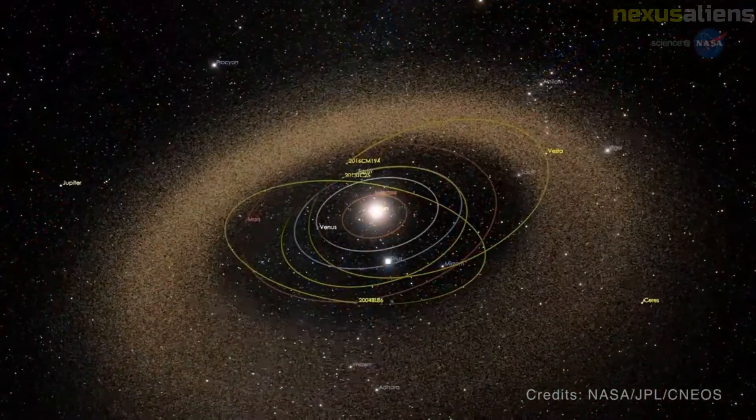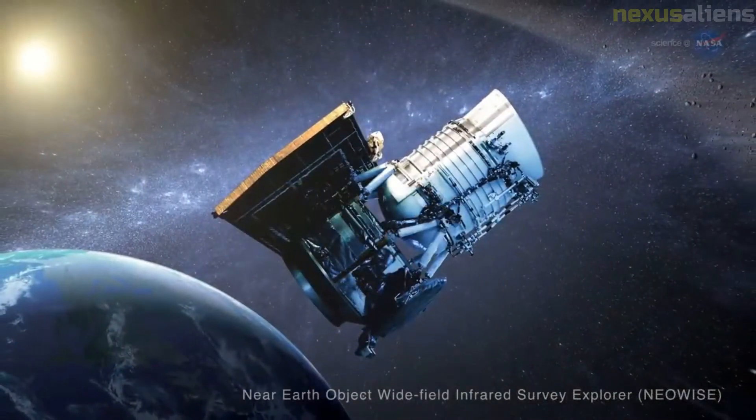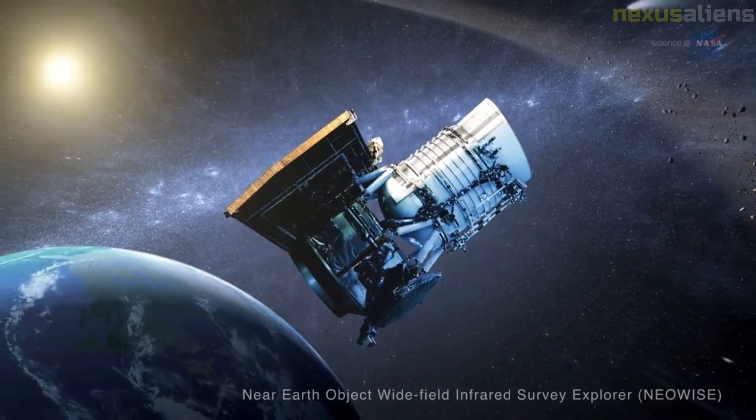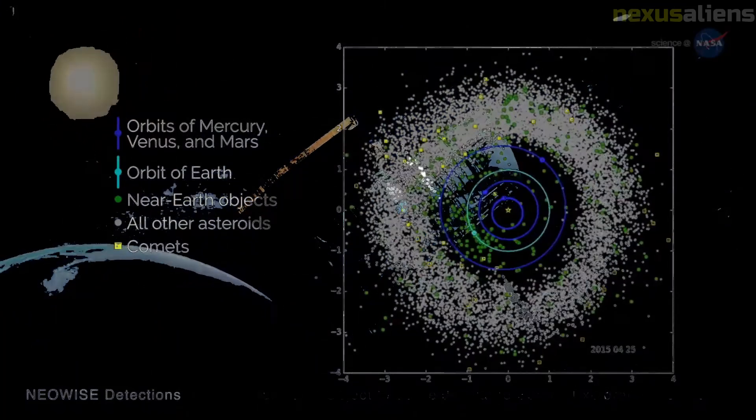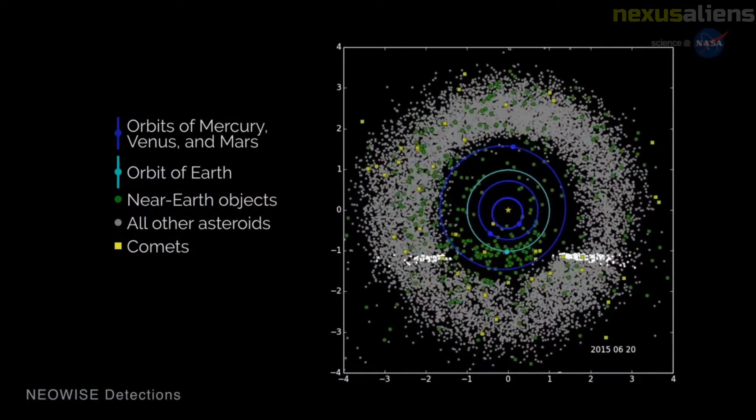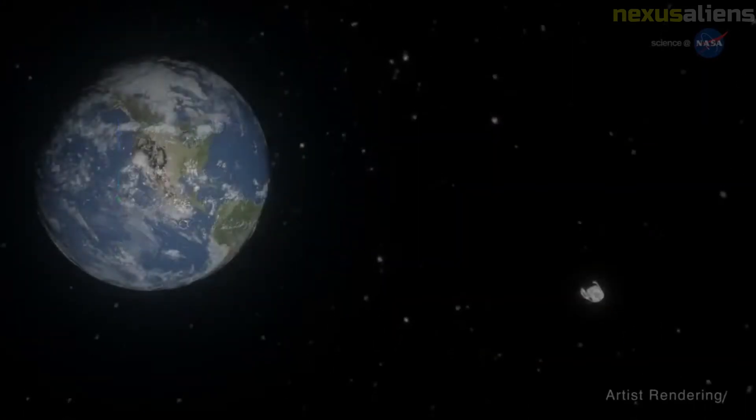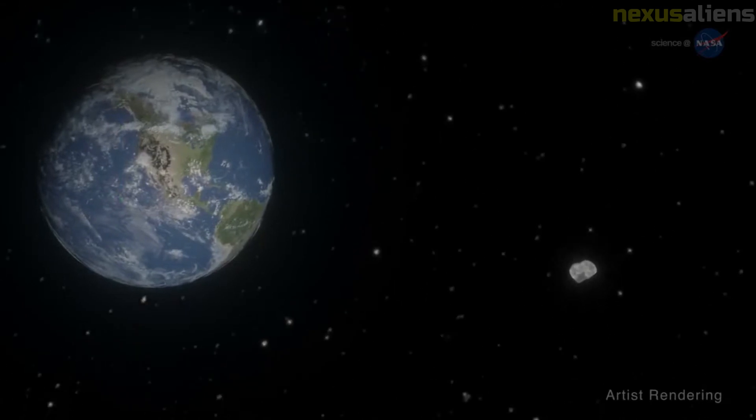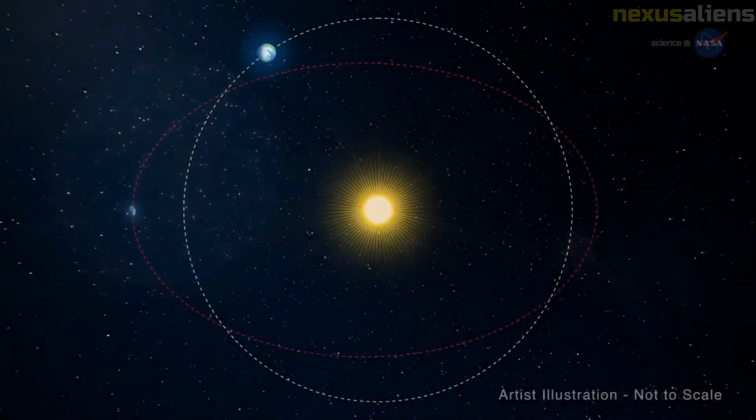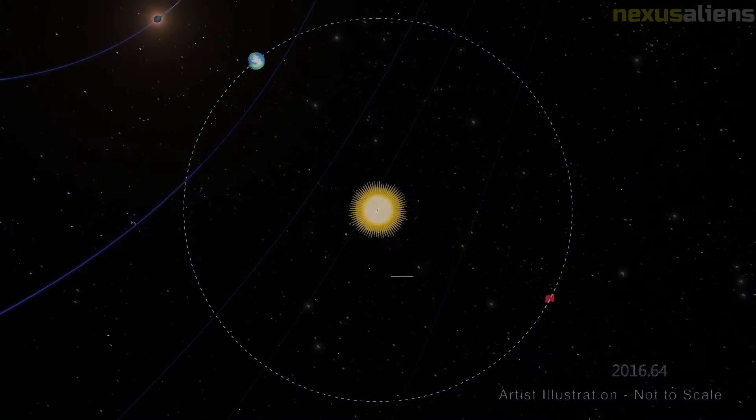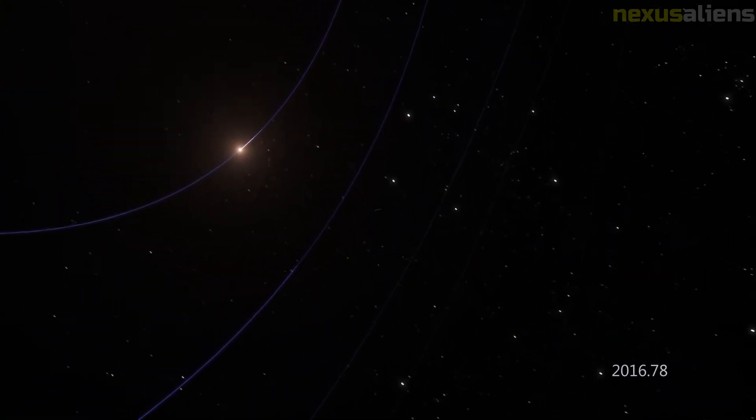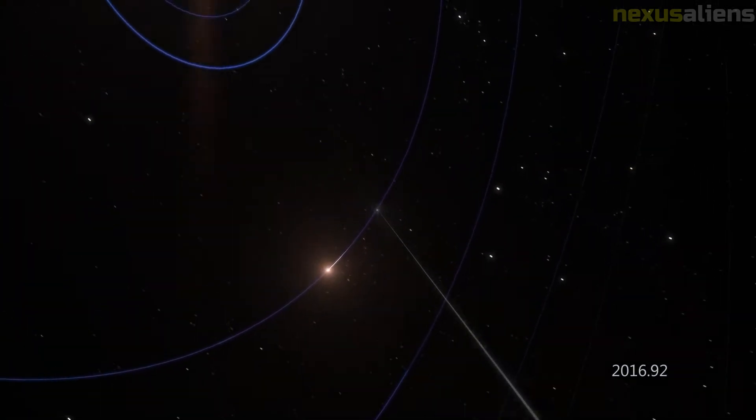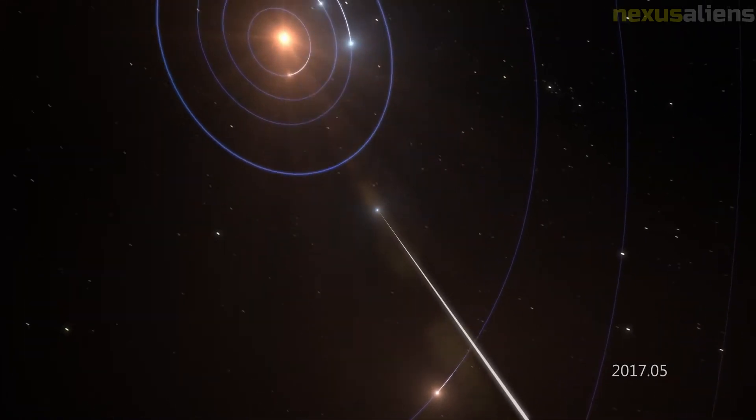As the first known object of its type, Oumuamua presented a unique case for the International Astronomical Union, which assigns designations for astronomical objects. Originally classified as Comet C/2017 U1, it was later reclassified as Asteroid A/2017 U1 due to the absence of a coma. Once it was unambiguously identified as coming from outside the solar system, a new designation was created.